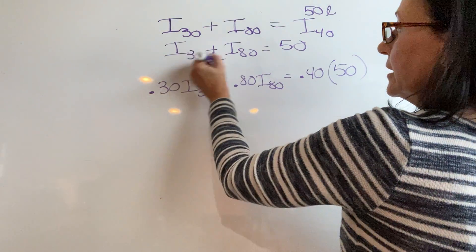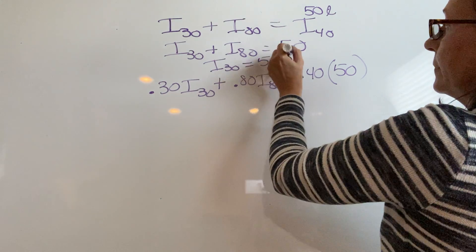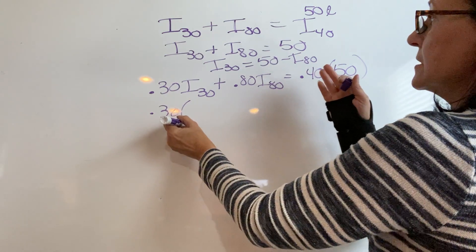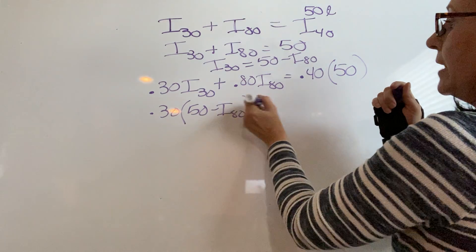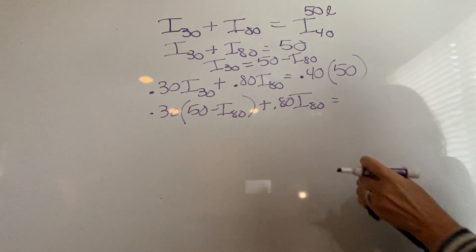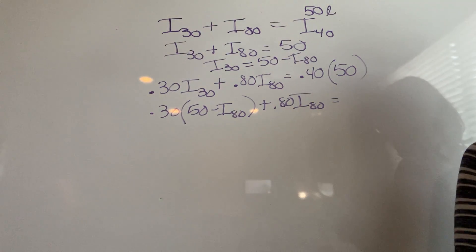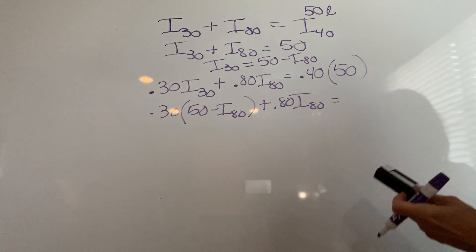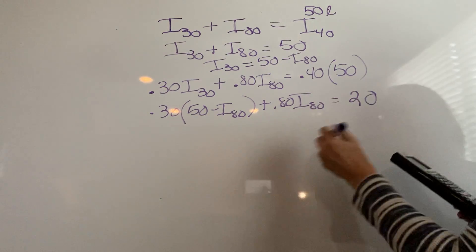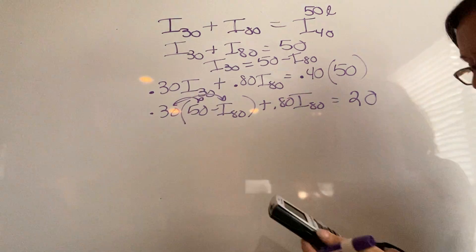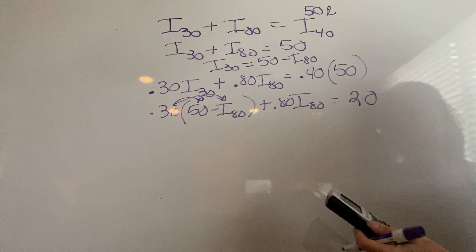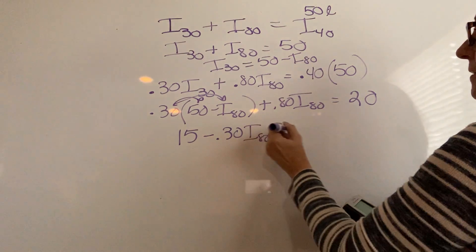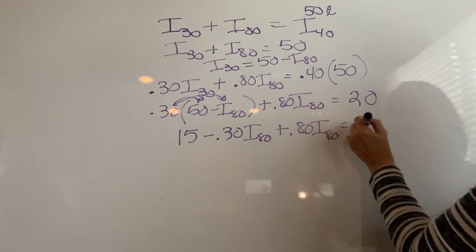I'll solve for I-30 by subtracting I-80 on both sides. So 0.30 times 50 minus I-80 plus 0.80 I-80 equals 0.4 of 50. I'll multiply that out, it's 20. Then we'll distribute the 0.3. So 0.3 times 50 is 15 minus 0.30 I-80 plus 0.80 I-80 equals 20.